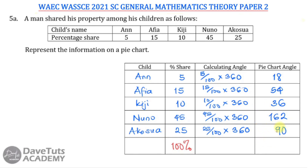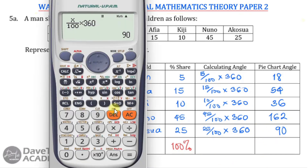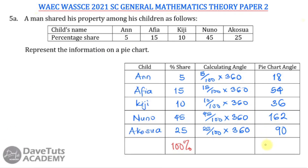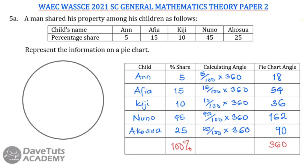These are tips that can help you be very fast when calculating. We also need to sum all of these angles to ensure they add up to 360, so we can represent them appropriately on the pie chart. Checking: 18 plus 54 plus 36 plus 162 plus 90 gives us 360. So we are on track and can now put all of this information on the pie chart.